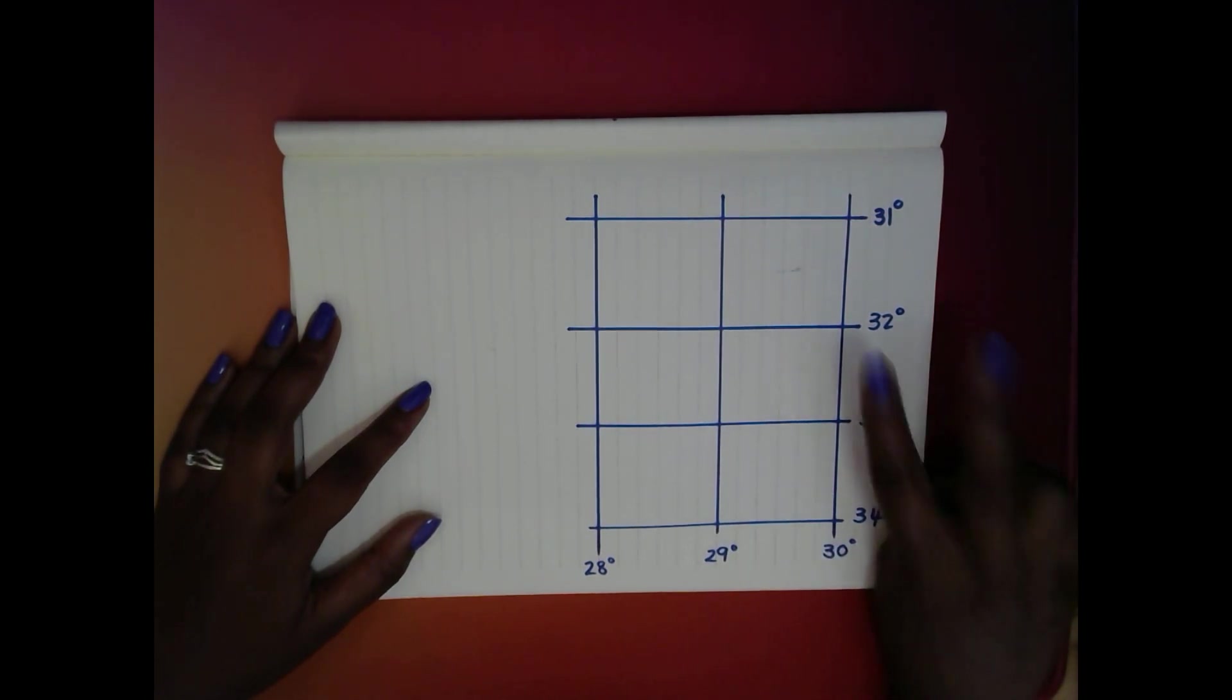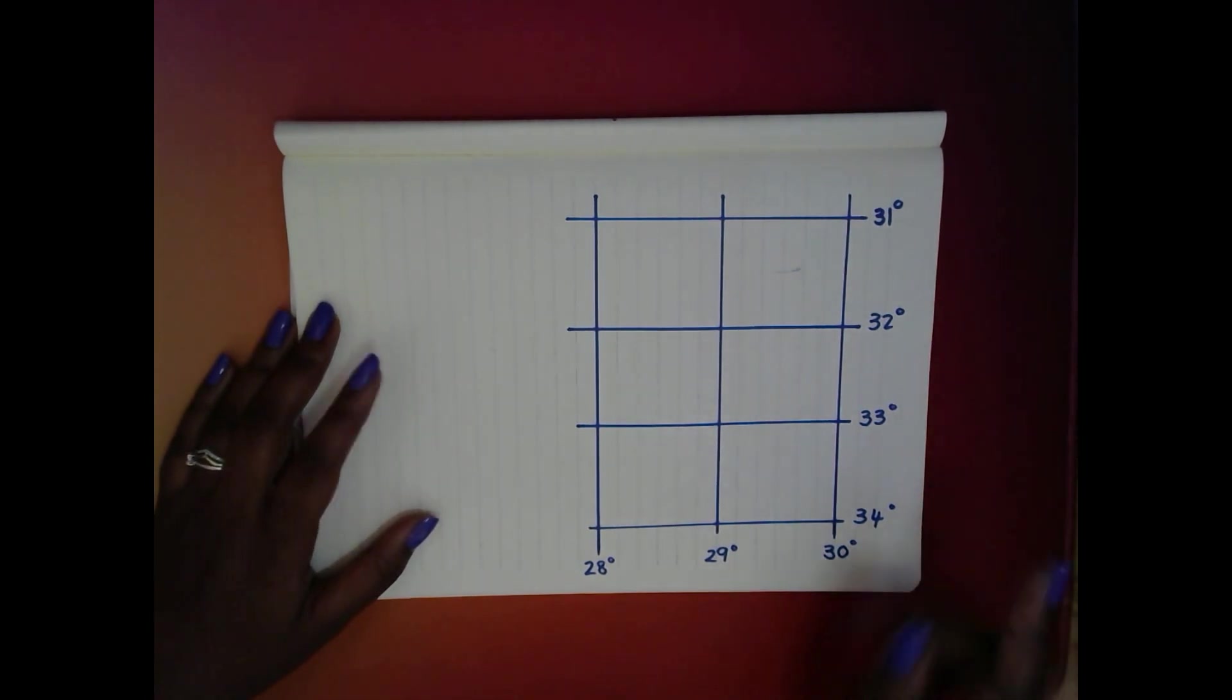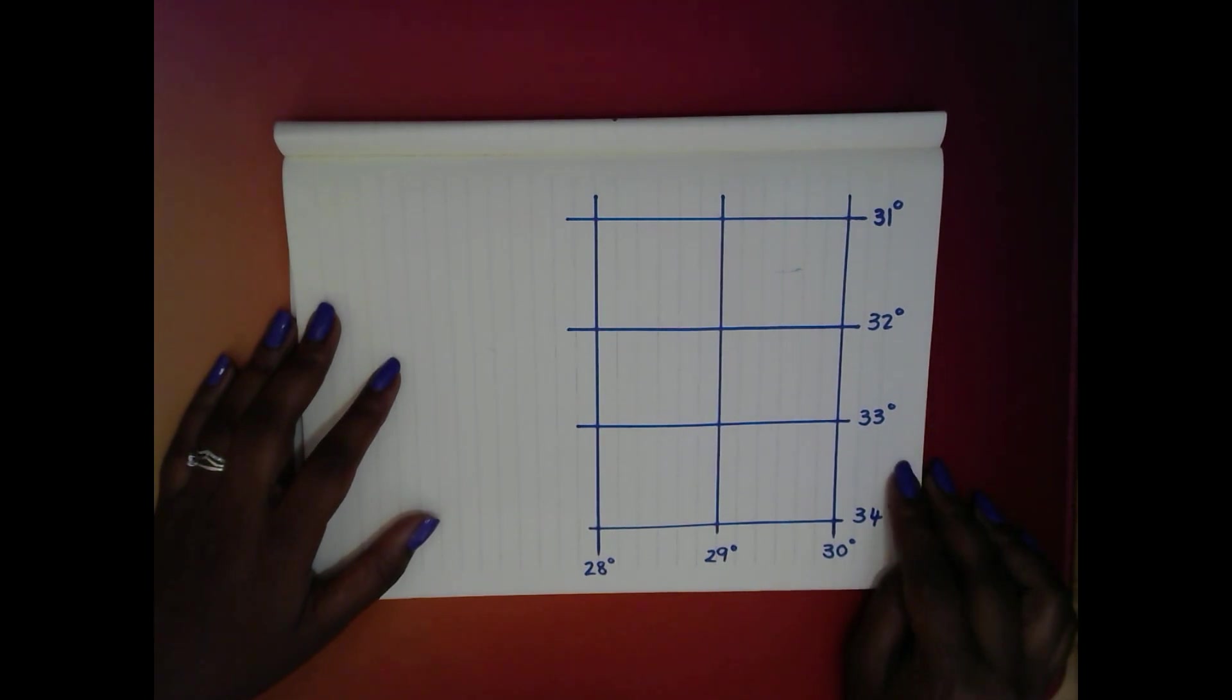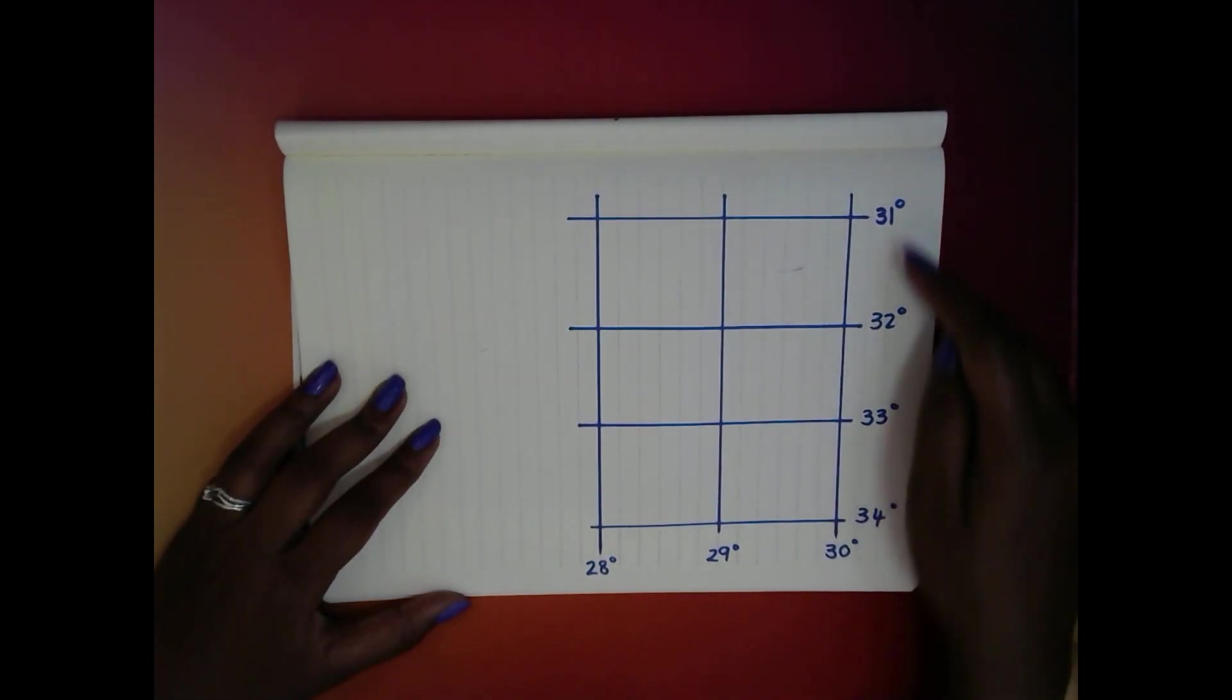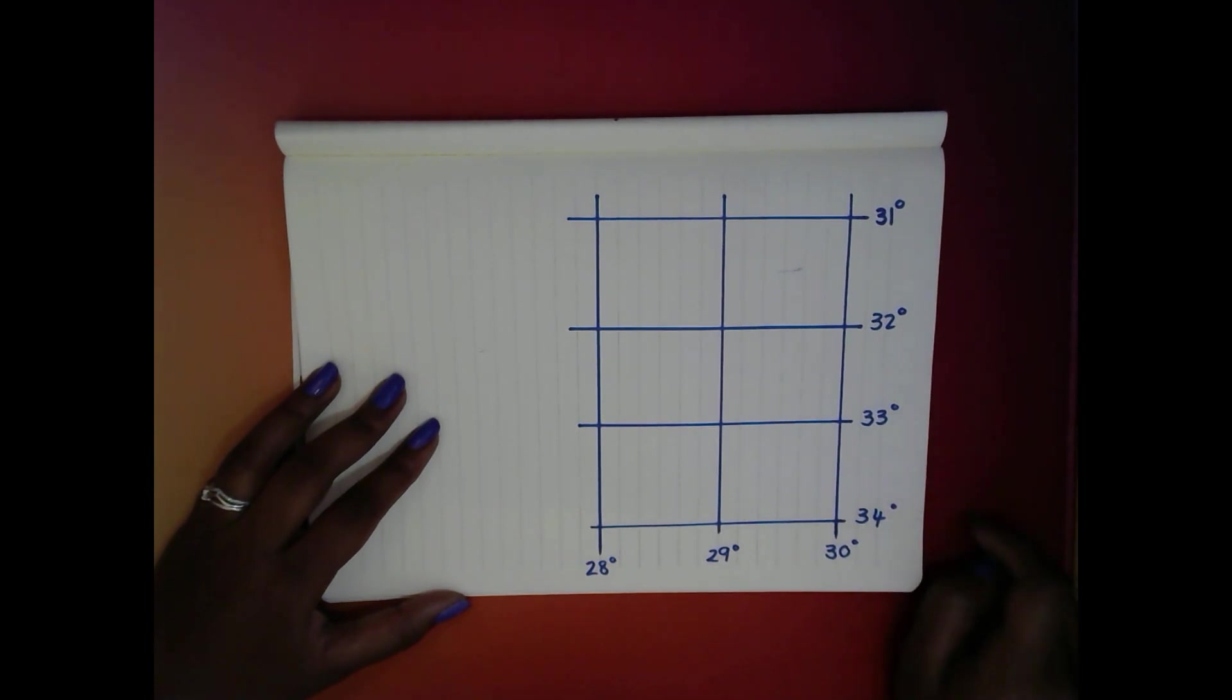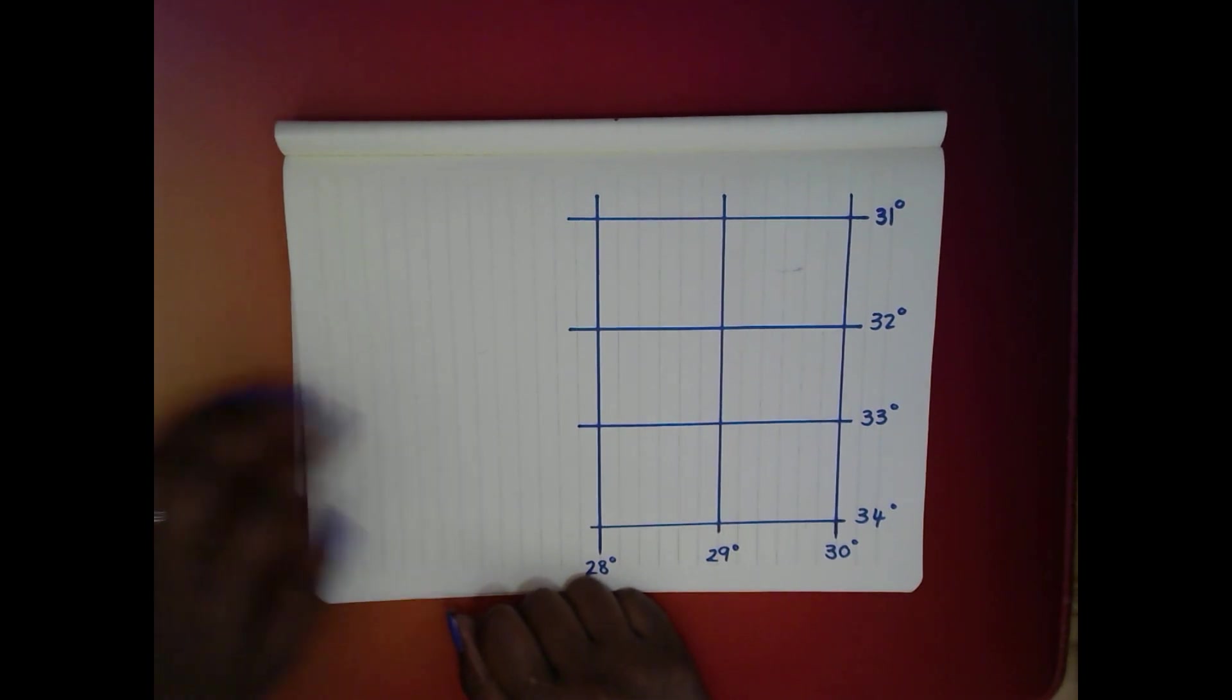Now there's two problems. The first problem is that in the last video we could see whether something was north, south, east, or west based on where the equator and the Greenwich meridian is. And this time we don't have one. There is no equator, there is no Greenwich meridian. In fact, these numbers don't even tell us what direction we're going in.